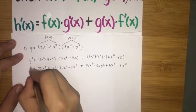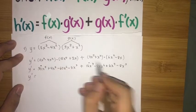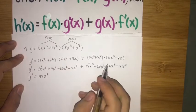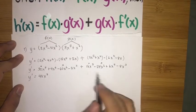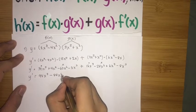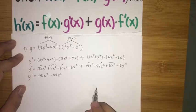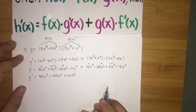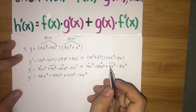Now let's combine like terms. For the highest power, we have 30x to the seventh plus 18x to the seventh, which gives 48x to the seventh. For x to the sixth, negative 60 minus 24 gives negative 84x to the sixth. For x to the fourth, 4 plus 6 gives positive 10x to the fourth. And finally, we have negative 16x cubed. So our final answer is 48x to the seventh minus 84x to the sixth plus 10x to the fourth minus 16x cubed.